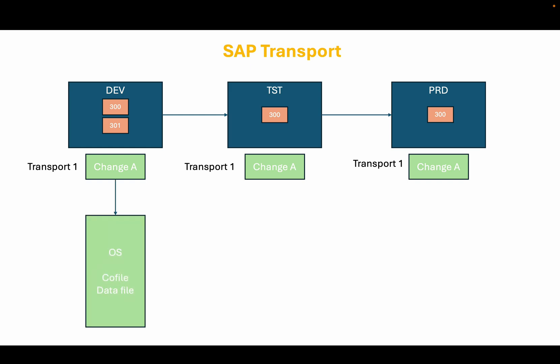When a transport request is released in the SAP development system, two types of files are created. One is the co-file, also known as the control file, and the other one is the data file. These files play crucial roles in the SAP transport process. The co-file contains metadata and control information about the transport request. This includes details such as the type of objects being transported, the source and target system, and instructions for the transport system on how to process the transport.